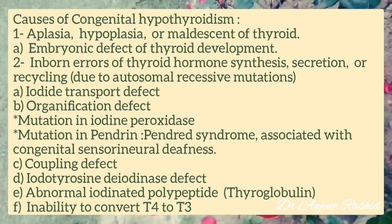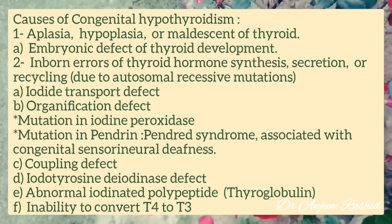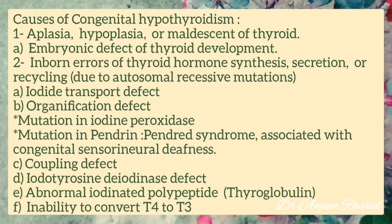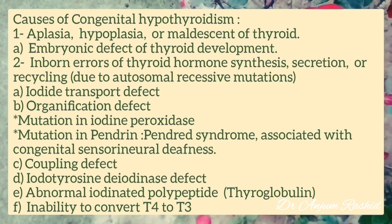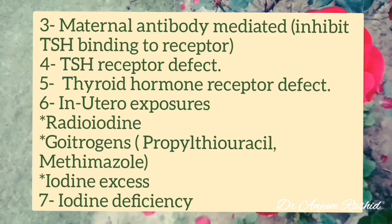These inborn errors can occur in iodide transport defect and organification defect, which can result from mutation in the iodine peroxidase or mutation in Pendrin, which can result in Pendred syndrome associated with congenital sensorineural deafness. Other causes are coupling defect, iodotyrosine deiodinase defect, abnormal iodinated polypeptide, or inability to convert T4 to T3.